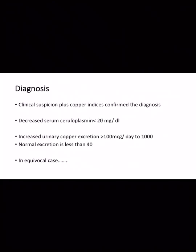Diagnosis is based on clinical suspicion, and copper indices confirm the diagnosis. There is decreased serum ceruloplasmin, less than 20 milligrams per deciliter. There is increased urinary copper excretion, which is normally less than 40 micrograms per day, and in Wilson disease increases to 100 to 1000 micrograms per day. In equivocal cases, we give D-penicillamine 500 milligrams and measure urinary copper excretion, which may increase up to 1600 micrograms per day.